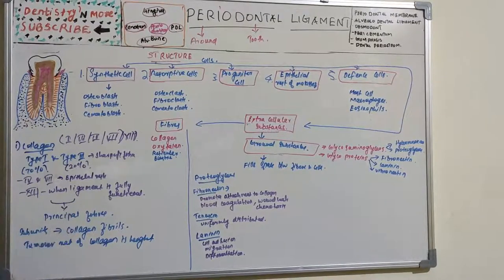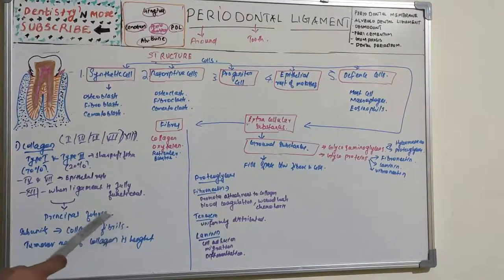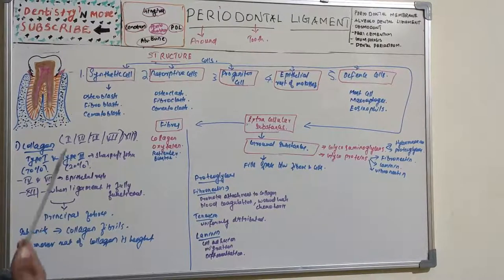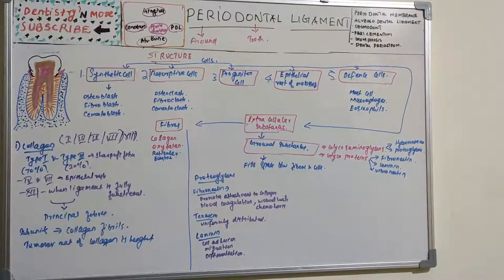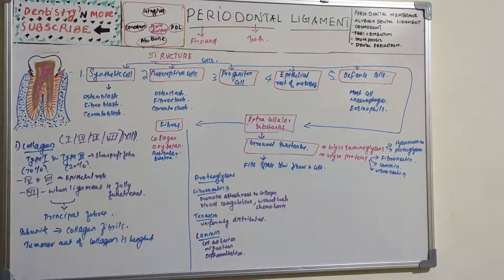Principal fibers are very important and will be covered in the next video. Within each collagen bundle the subunits are collagen fibrils; fibrils combine to form fibers. The turnover rate of collagen is faster than all other connective tissue collagen and is highest in the periodontal ligament. The turnover rate appears to be highest towards the root apex, and collagen on the cementum side has a lower turnover rate than on the bone side, which shows a higher turnover rate.